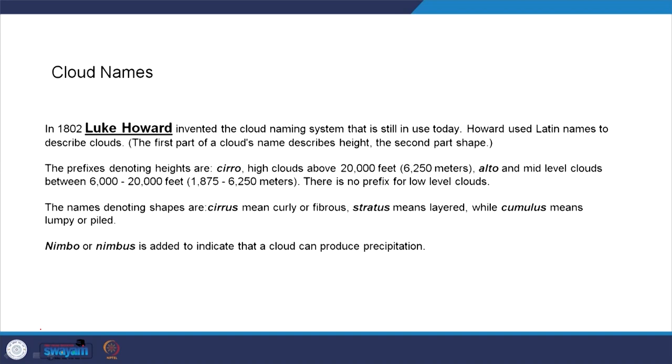Of the various different types of clouds, not all can produce sufficient precipitation — some may not be able to produce any. To differentiate, whatever type of cloud can produce precipitation is suffixed with 'nimbo' or 'nimbus'. Now let us move ahead and understand the basic types of clouds. There are three basic types based on shape: cirrus, cumulus, and stratus. Stratus is the layered type, cumulus is the fluffy feathery kind, and cirrus is the fibrous type.